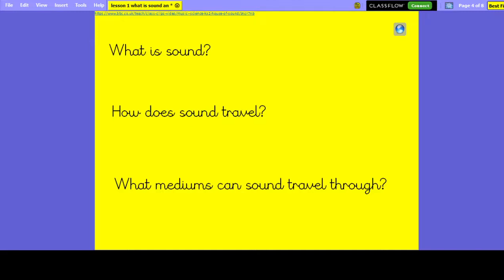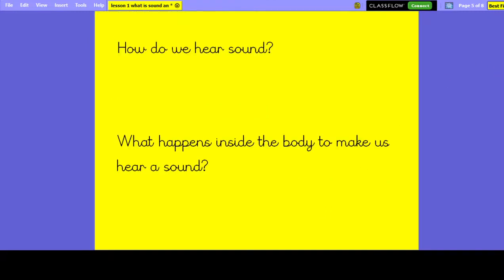So we're then going to think about these questions here. So we're thinking about how do we hear sound and what happens inside the body to make us hear that sound. So we're now going to return back to the video and we're going to listen to the next part, which talks through what happens in the ear and how we actually hear those vibrations.